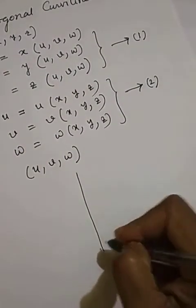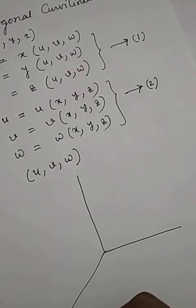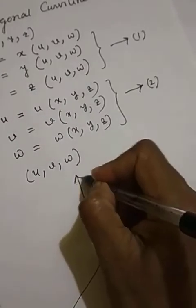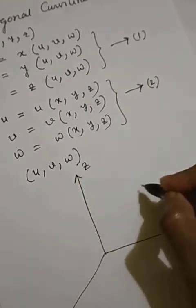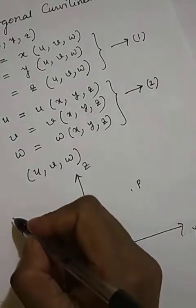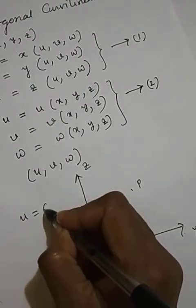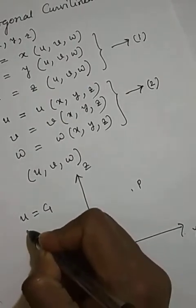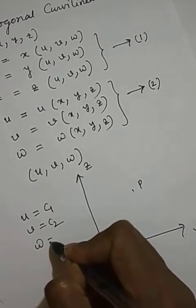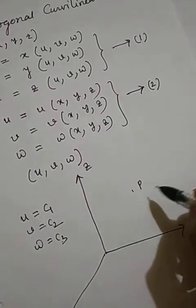Now let us draw the coordinate system x, y, z and take the point P, and let us take the coordinate surfaces u equals c1, v equals c2, w equals c3, where c1, c2, c3 are constants.